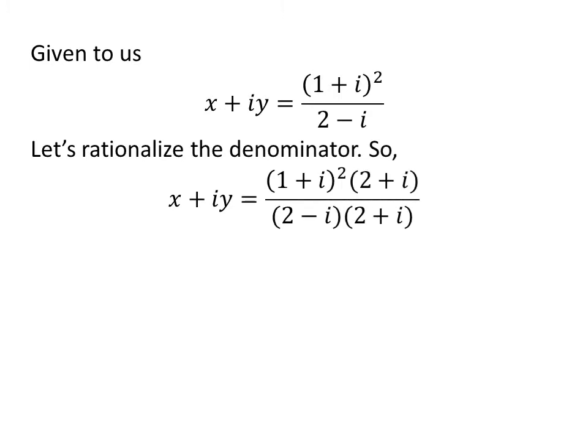Let us rationalize the fraction. We will multiply the numerator and the denominator by (2 plus i), as multiplying the numerator and denominator of a fraction by a common factor does not change the value of the fraction.